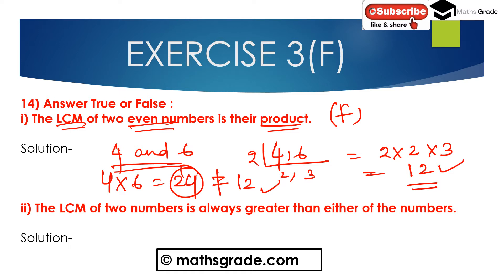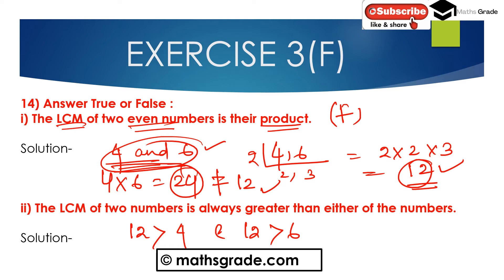Now question number 2: The LCM of 2 numbers is always greater than either of the numbers. Taking the example of 4 and 6, the LCM of 4 and 6 is 12. Since 12 is greater than 4 and 12 is greater than 6, the LCM is greater than either of the numbers. So the LCM of 2 even numbers being their product is false, and the LCM always being greater than either number is true.